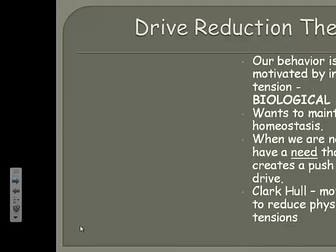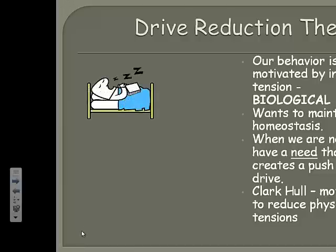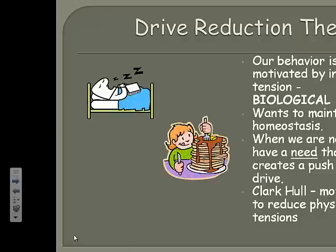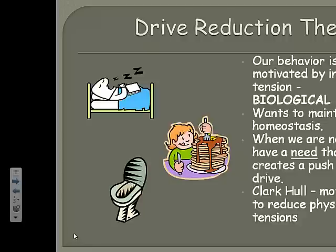Clark Hull, in the early 1940s, came up with this theory, and he basically said that many of our motivations are caused by disruptions to homeostasis. For example, when we are tired, we sleep — we feel this overwhelming motivation to put our head down and go to sleep. When we are hungry, that uncomfortable feeling in our stomach motivates us to take in sustenance, like those pancakes. And when we feel the need to go, we've got to go, and there's not a lot of things that are going to interfere with that drive.